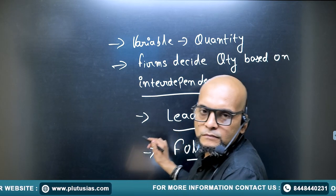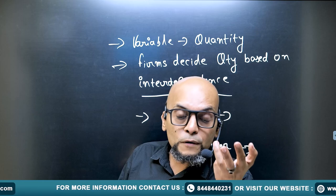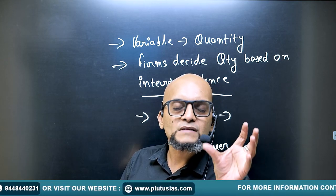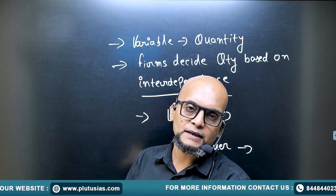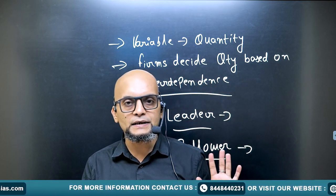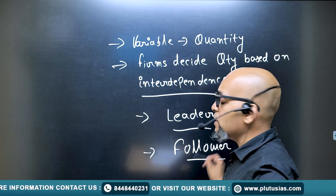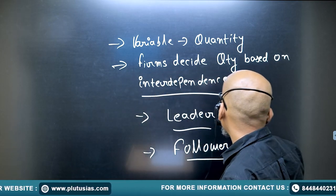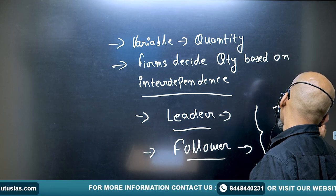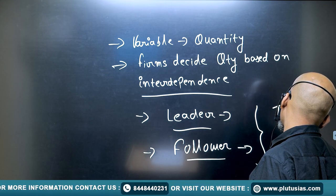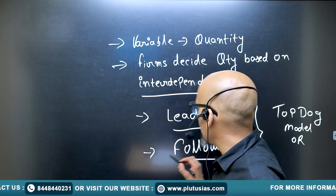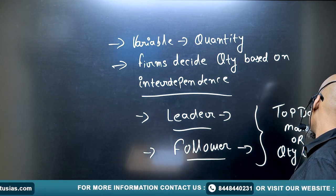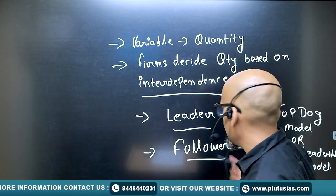Whatever the leader does in the market — the leader means the more experienced, bigger firm — whatever output-related decision the leader takes, the follower copies those decisions. The follower is a smaller firm, a newer firm, with less expertise. This works on a leader-follower model, so the Stackelberg model is also called the Top Dog Model, or the Quantity Leadership Model.